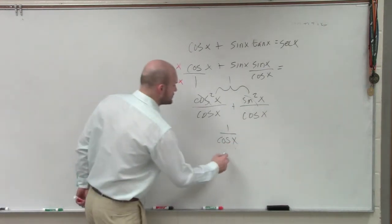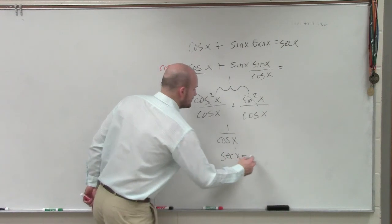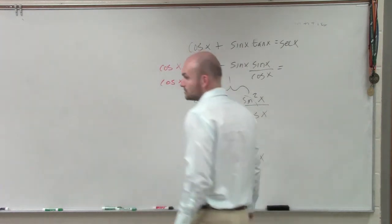And 1 over the cosine of x, by using your reciprocal identity, is equal to secant of x.